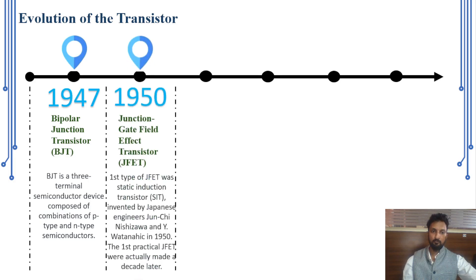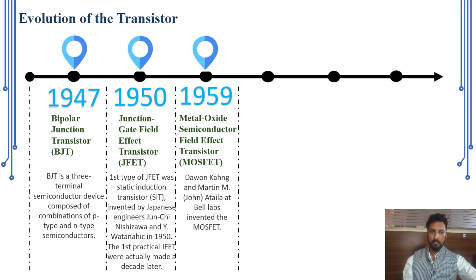After that came the invention of the JFET. The JFET was invented by Japanese engineer Shunichi Nishizawa in the 1950s, but the first practical JFET was made about a decade later, around the 1960s. In 1959, the benchmark invention occurred: the metal-oxide-semiconductor field-effect transistor, by Kahng and Atalla at Bell Laboratories, which is the basic building block of any IC technology.